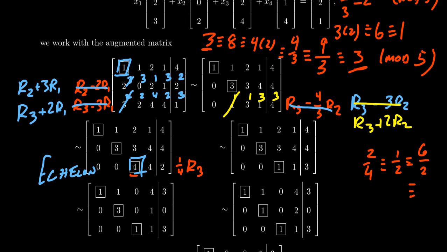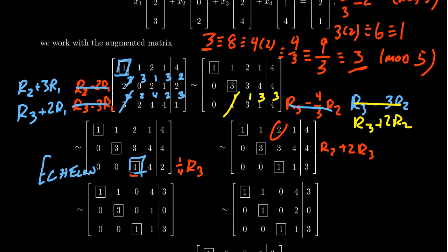And to get rid of the 2 in row 1: R1 plus 3×R3. We get 2, 2, and 6=1. Then 3, 3, and 9≡4 mod 5. Combining: 2+3=5=0, 3+1=4, 4+4=8≡3. Then 3+2=5=0, 4+2=6≡1, and 4+1=5=0. That completes the reduction.